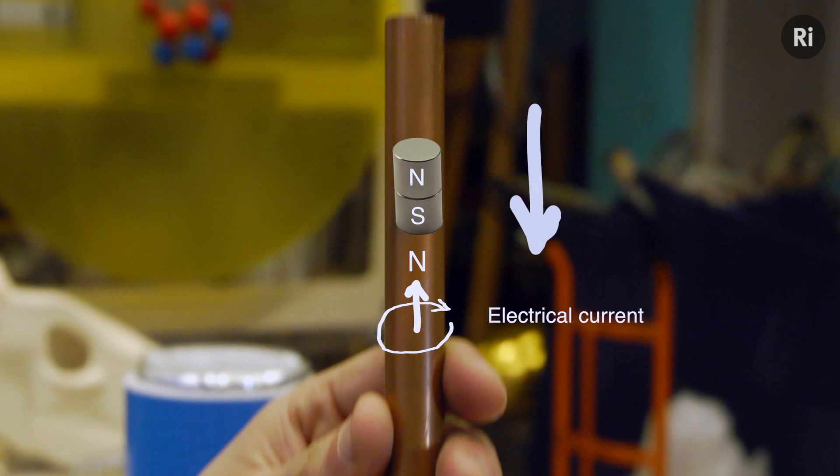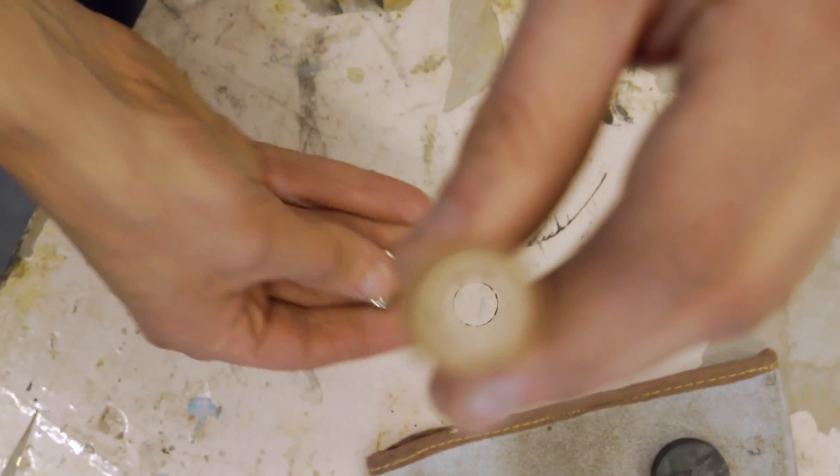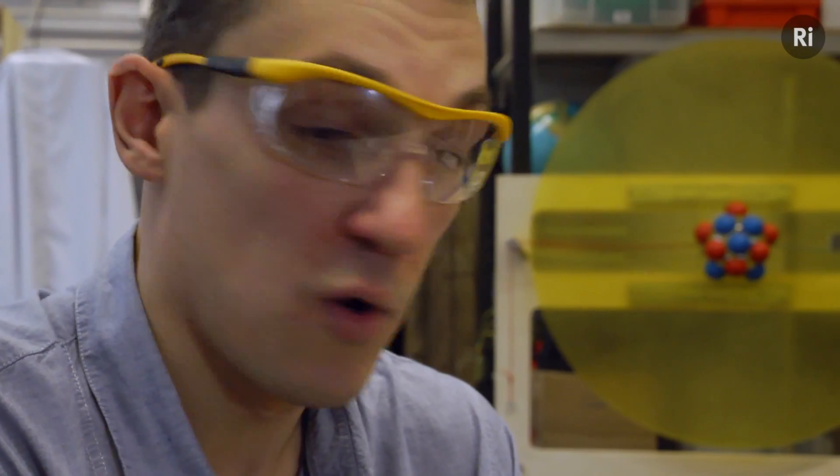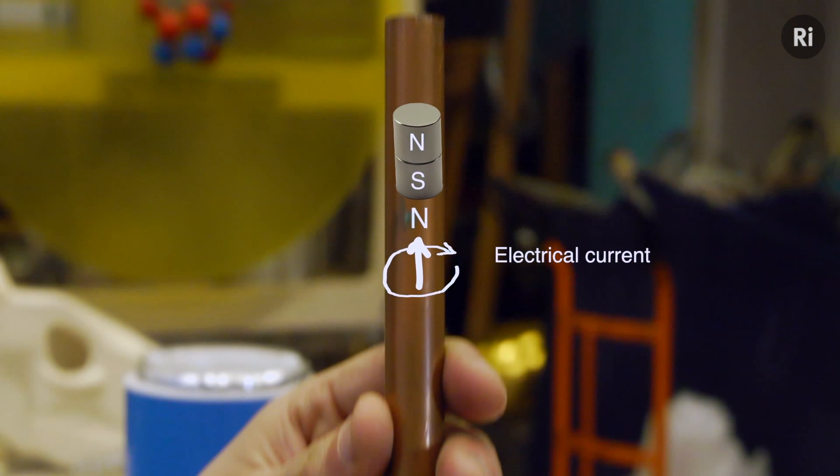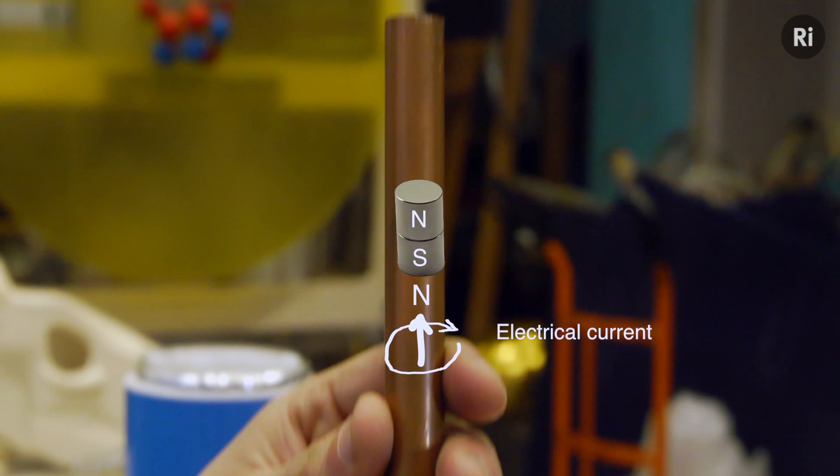That magnetic field will always arrange itself so as to resist the motion that's creating it. This is the fundamental principle of electromagnetism: moving magnets near conductors or moving conductors near magnets creates electric currents. Because this is not a superconductor, because it has electrical resistance, the currents that are created as the magnet falls through will always tend to die away. So what actually happens is it just falls slowly through the tube.